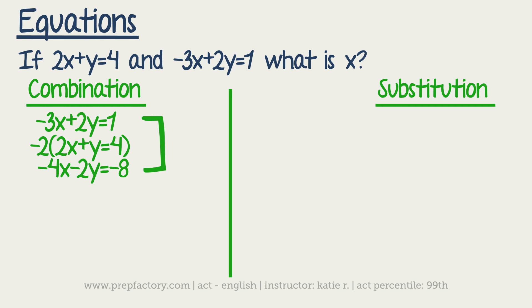So if I'm going to add my two equations, I have negative 3x plus negative 4x. So I have negative 7x on the bottom. Then 2y and negative 2y cross out, which is always nice.